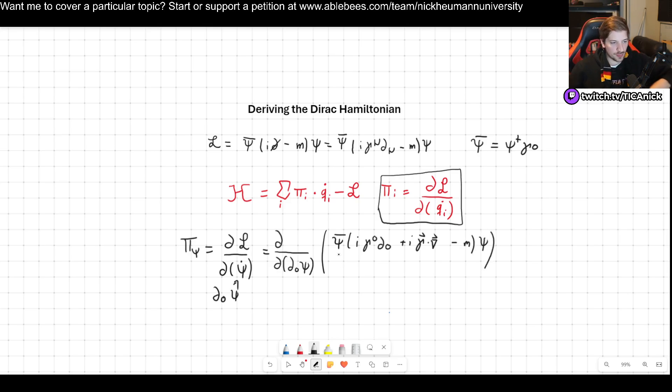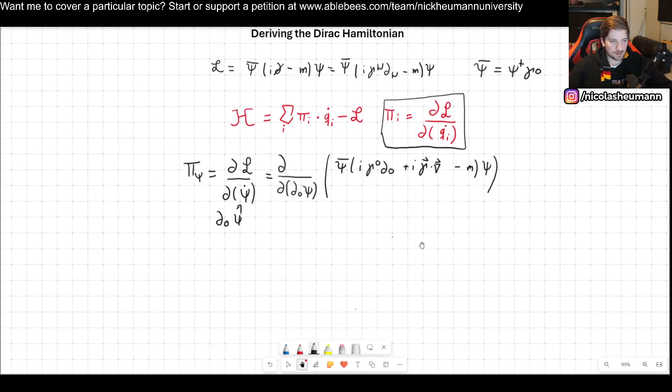So now if we're taking the derivative with respect to the time derivative, the only one present is here. When we multiply or we let it work on psi, this and this is going to be zero. So for that reason, the only contribution is from the first term.